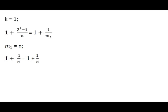Let's examine the most simple case, when k equals 1. In this case, the right side of this equality has only one term, 1 plus 1 over m1, and if we set m1 simply equal to n, then for any positive integer n, this equality becomes identity. This proves this theorem for the case k equals 1.